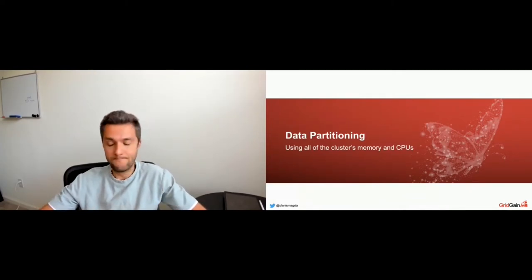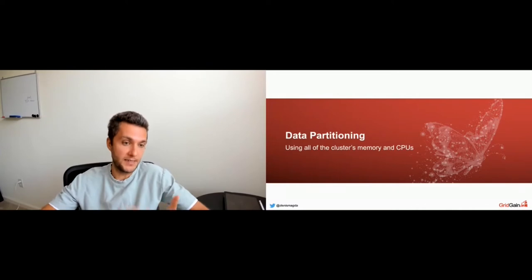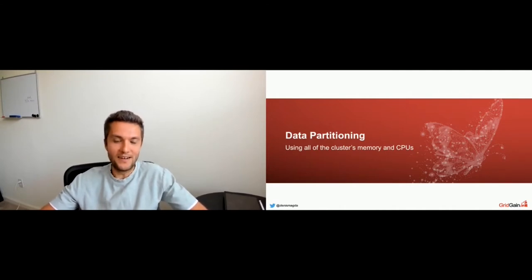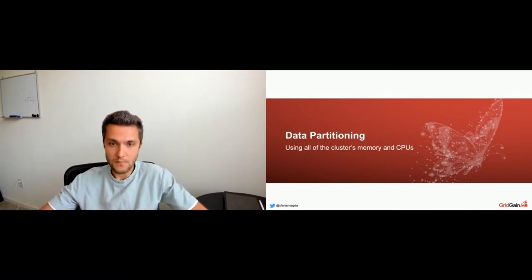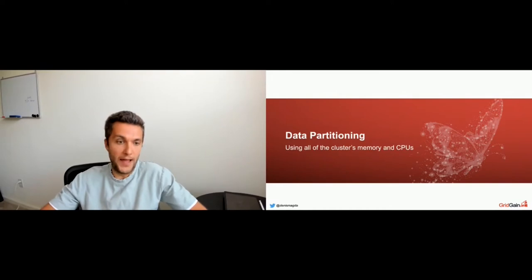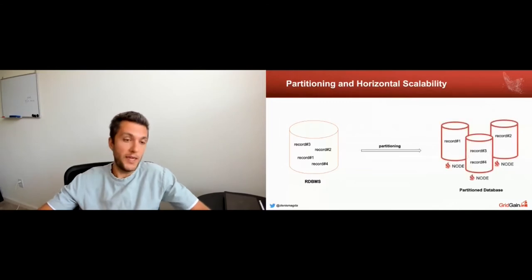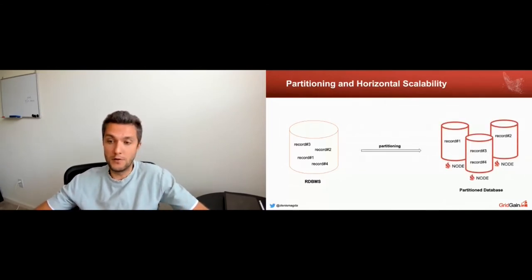Now let's follow the primary course: the first essential is data partitioning. This technique lets us distribute records and use all the resources of our cluster. Compared to classical relational databases where all records are stored on a single machine, the goal of partitioning is to take all those records and distribute them across a cluster of nodes. I'll use the world database schema as an example — it keeps countries, cities, and a country-language table.